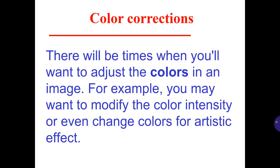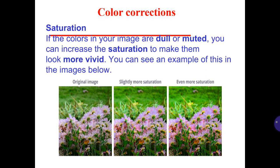Color corrections: There will be times when you want to adjust the colors in an image. For example, you may want to modify the color intensity or even change colors for artistic effect. Saturation: If the colors in your image are dull or muted, you can increase the saturation to make them look more vivid. You can see an example of this in the images below: the original image, after slightly more saturation, and even more saturation.